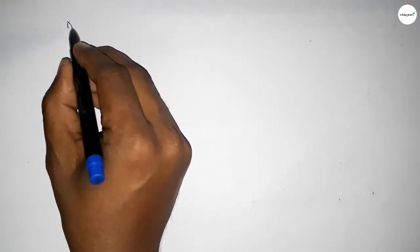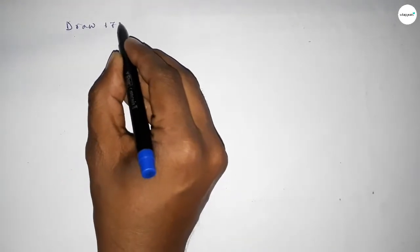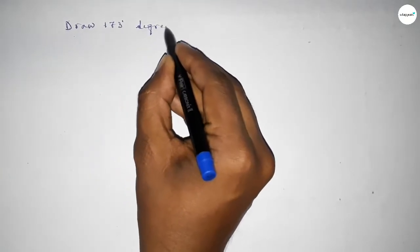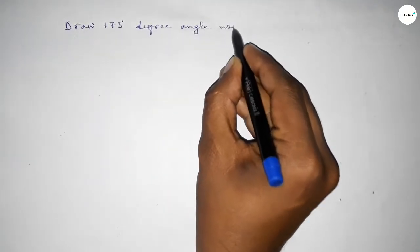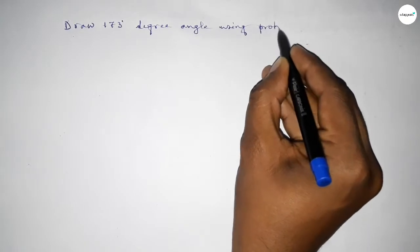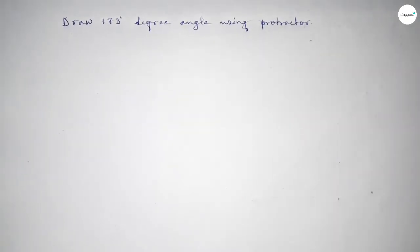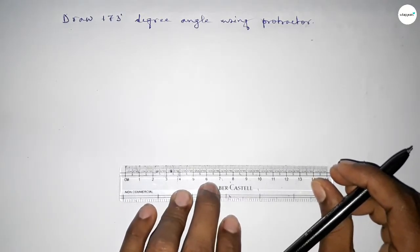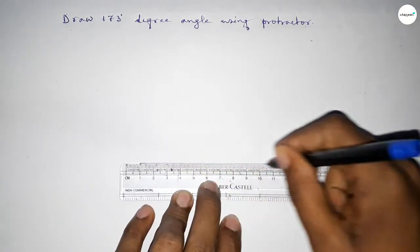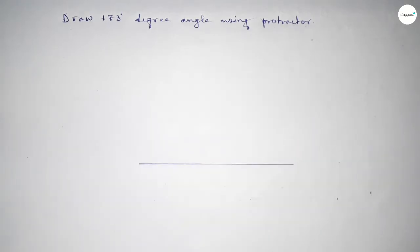Hi everyone, welcome to Syshare Classes. Today in this video we have to draw a 173 degree angle by using protractor. So let's start the video. First of all, we have to draw here a straight line of any length.